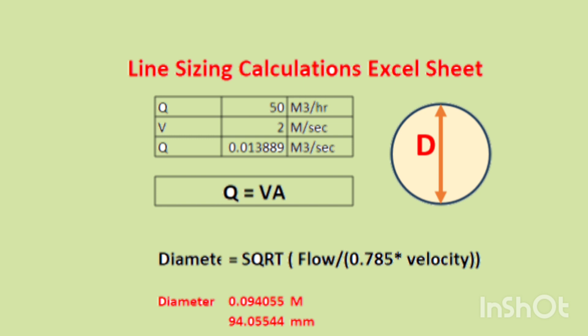This is a very basic calculation method. Using this velocity of 2 meter per second, you can calculate pressure drop. So in the next video we will learn how to calculate pressure drop.